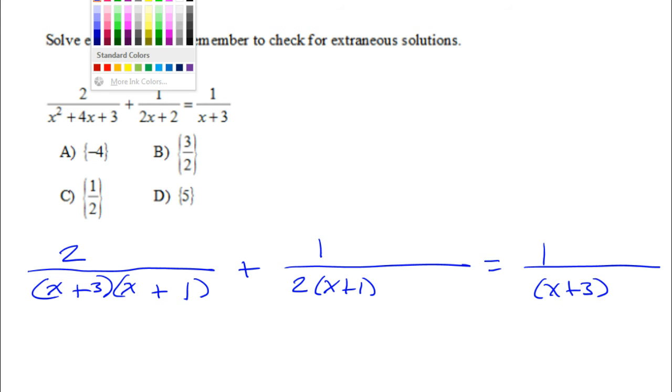Now in factored form, if I want to make these denominators be the same, it's easier for me to see what needs what. For example, the first denominator needs a 2, which this one has.